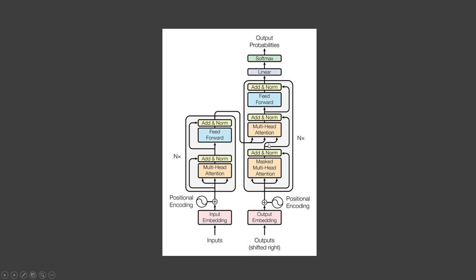To summarize, attention is used in the transformer in three places: first, self-attention in the encoder, where the input sequence pays attention to itself; second, self-attention in the decoder, where the target sequence pays attention to itself; and third, encoder-decoder attention in the decoder, where the target sequence pays attention to the input sequence.